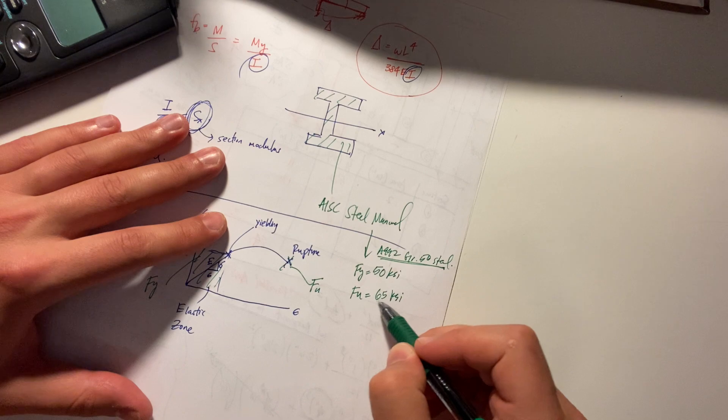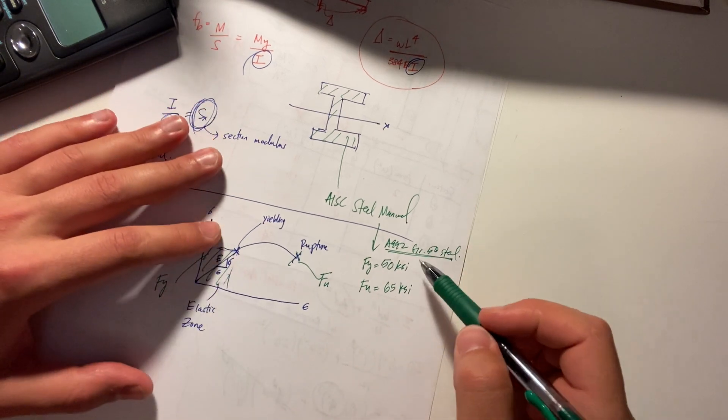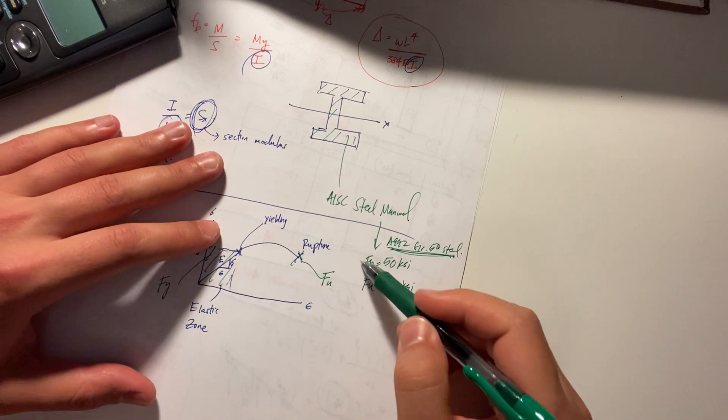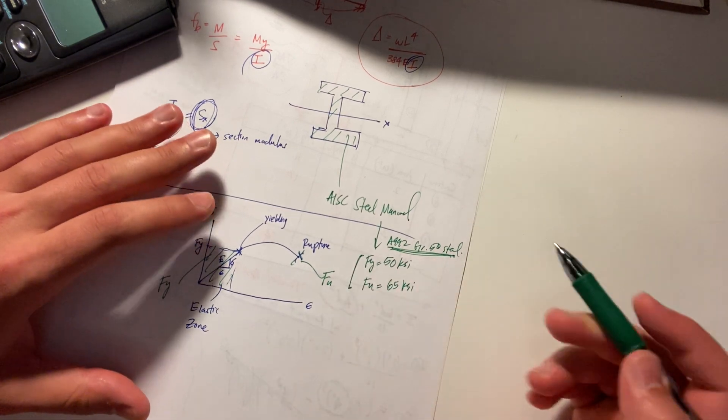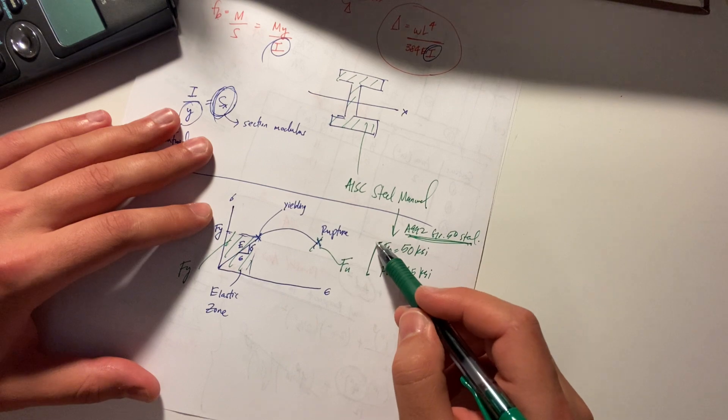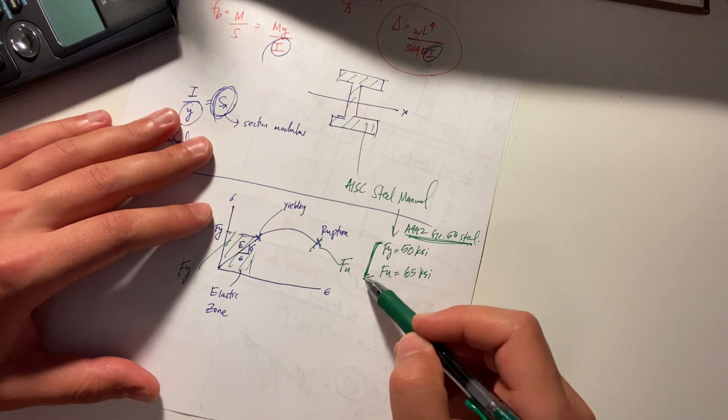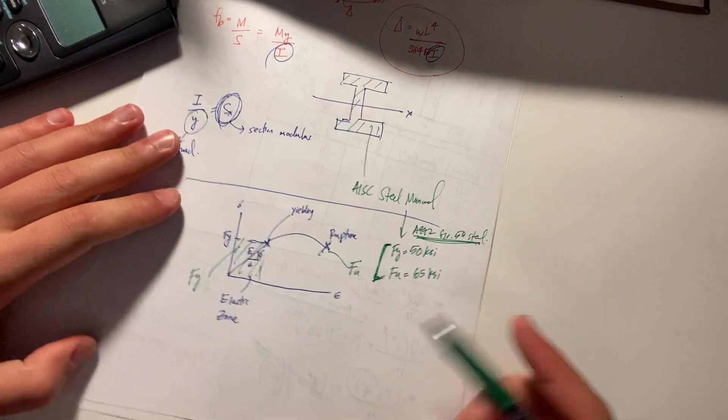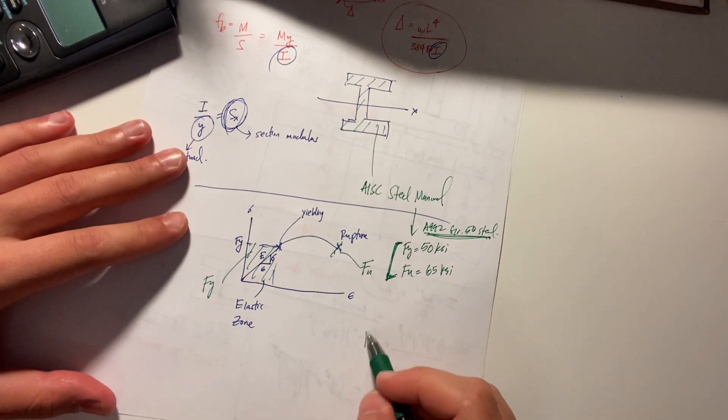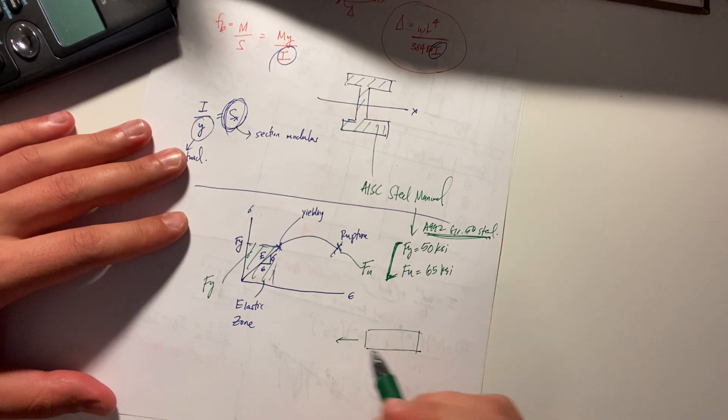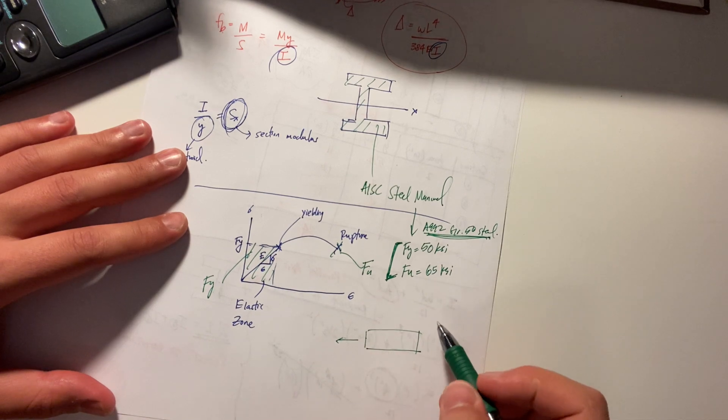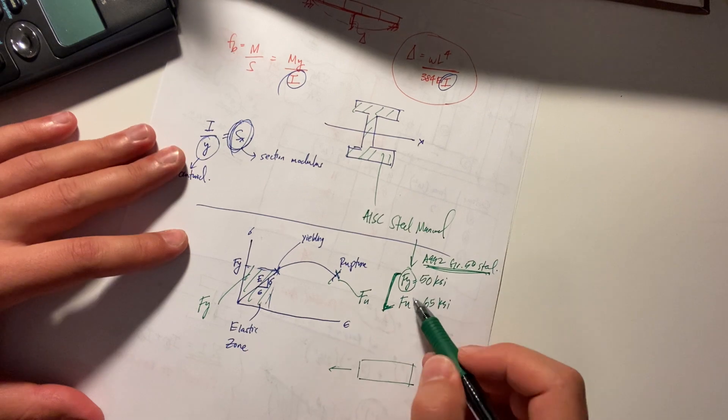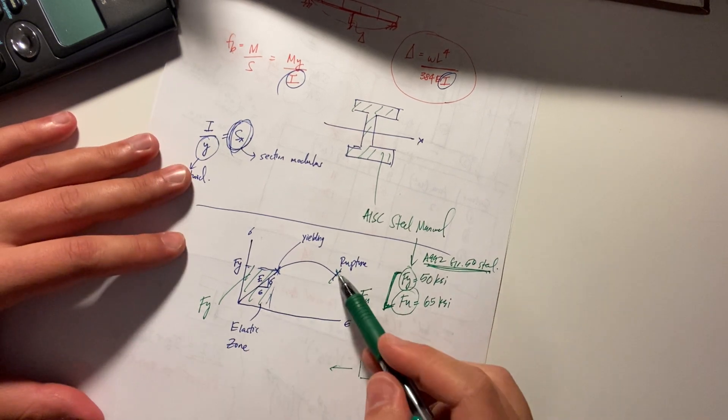You might go higher but for this specific one i believe it's 65 i could be wrong on that but you look in your manual these are associated with different things based on what you want to do with your members tension is an example with a tension member you're going to have to check yielding which would you would use this and then rupture which you would use this makes sense right